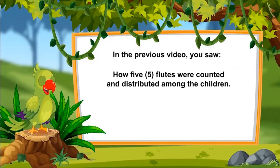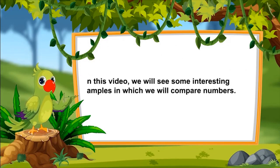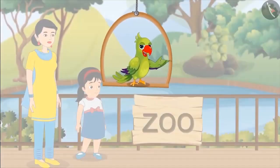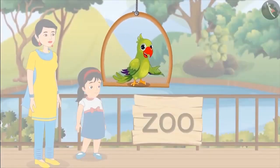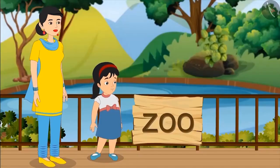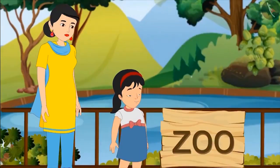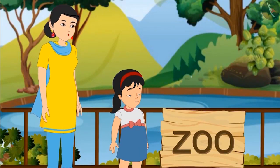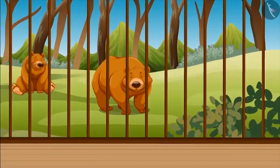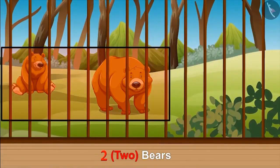How five flutes were counted and distributed among the children. In this video, we will see some interesting examples in which we will compare numbers. Today, Pinky has gone to the zoo with her mother. Mom, there are so many different types of animals. Yes, my dear. Can you tell me how many and which animals are there in each paddock? There is a lion in that paddock.